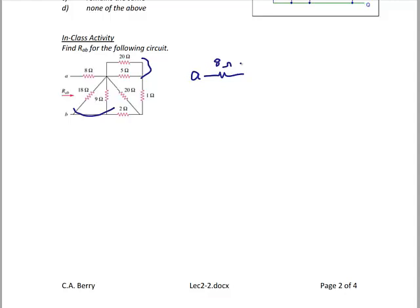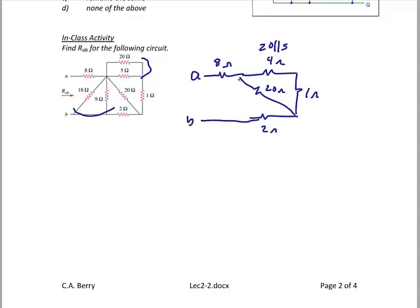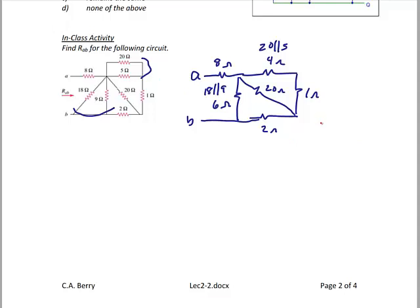I redraw the circuit. I have the original 8 ohm resistor, and 20 in parallel with 5 gives 4 ohms. On the right I have a 1 ohm resistor, the 20 ohm diagonal resistor, the 2 ohm resistor, terminal B, and 18 in parallel with 9, which is 6 ohms. Now I find that the 4 ohm and 1 ohm resistors are in series, giving a 5 ohm resistor.